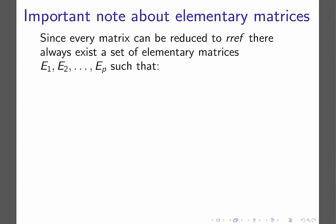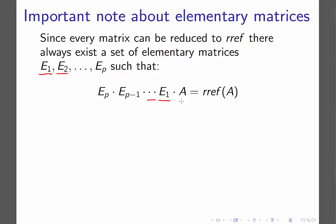An important note about elementary matrices: since every matrix can be reduced to reduced row echelon form, there always exists a set of elementary matrices such that multiplying them by A reduces it to RREF. The order matters — E1 is the first row operation and is multiplied by A first, E2 is second, and so on. What we need to know is that a series of elementary matrices multiplied by matrix A will reduce it into reduced row echelon form.